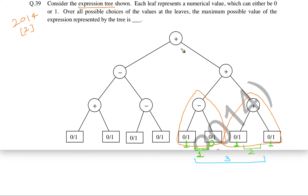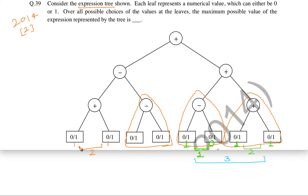Now let us talk about the right major subtree. Here also we have a plus operator, so this whole subtree needs to be maximized. But in order to maximize the whole subtree, since the operation at its root is minus, the left subtree should be maximum and the right subtree should be minimum. The maximum value of the left part — similar to before — is going to be 2. Now we need to find the minimum possible value of the right subtree.